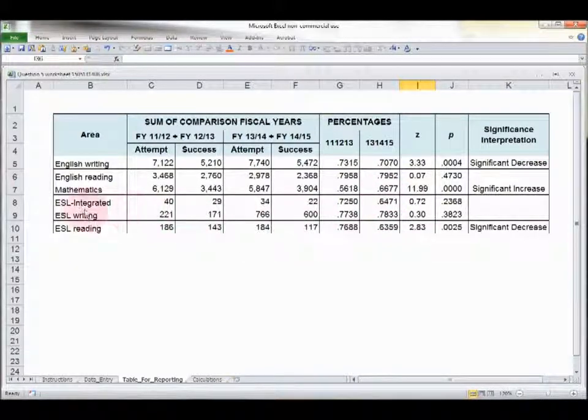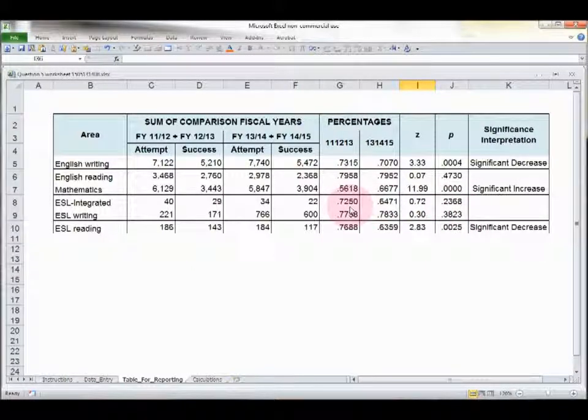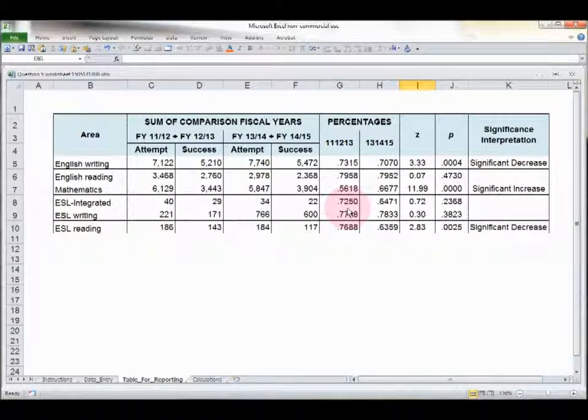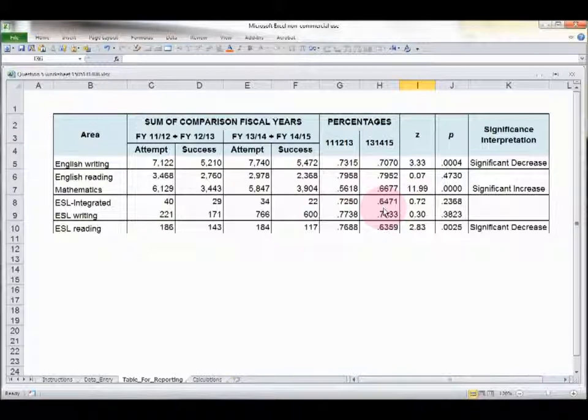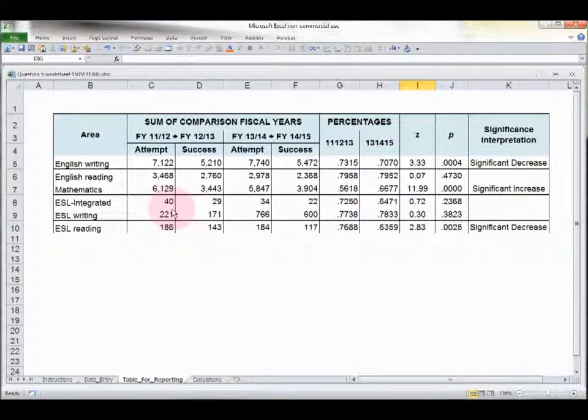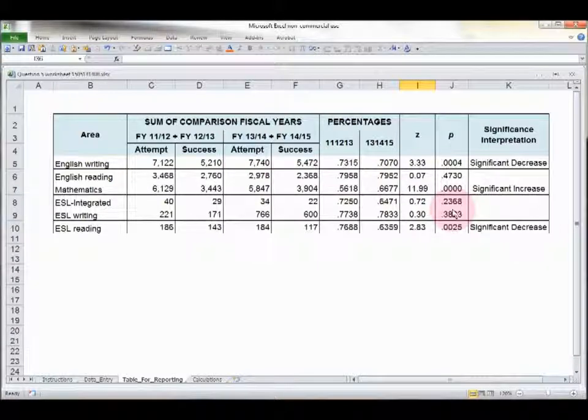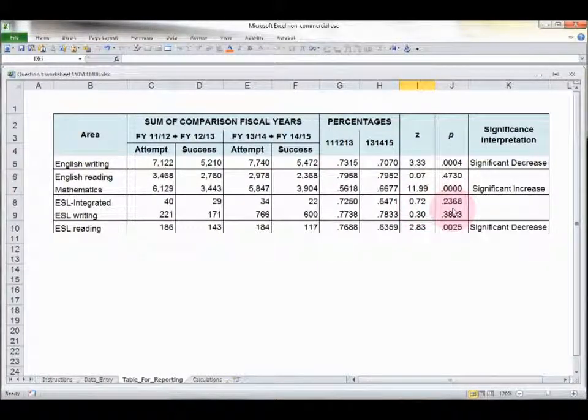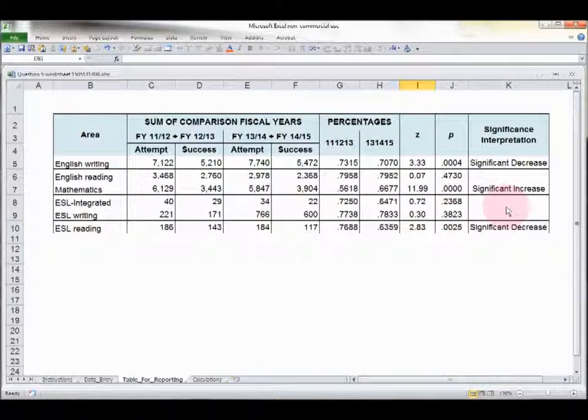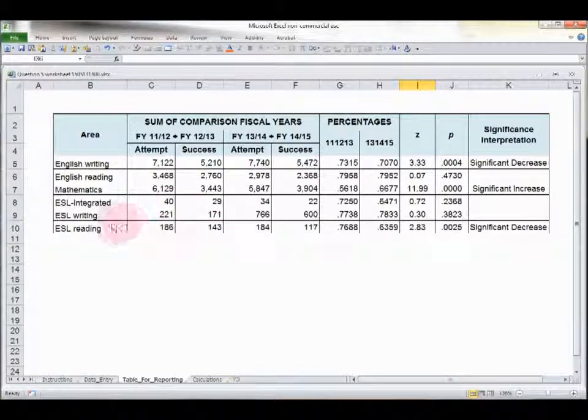A couple other ones to point out real quickly. Notice ESL integrated. It's got an insignificant p. Yet when you look at the percentages, the older scores are 72 and a half. More recently, 64. You'd say, wow, that's a big difference. Shouldn't that be a significant decrease? Well, it would be, except for the fact that the z-test is sensitive to the population size. And look how small it is, 40 and 34. If that was 400 and 340, this would undoubtedly be a very large z-score and a very low p-level, and it'd be a significant decrease. So if you see something like that, you should still tell us what you plan to do to try to make sure that the ESL integrated success rate gets better.